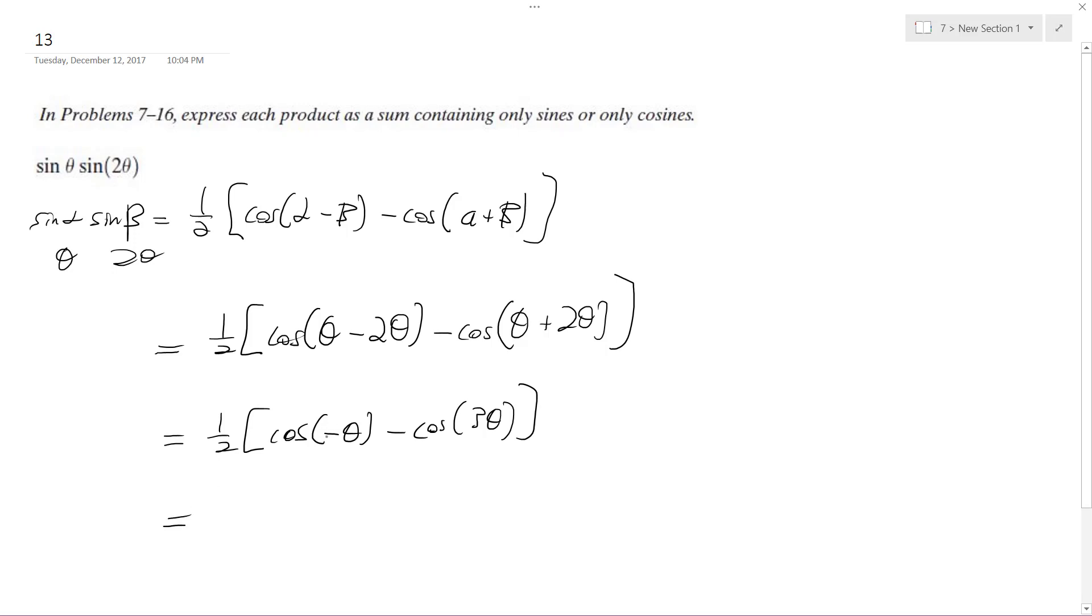And since cosine is an even function, this just comes out so I get one half cosine theta minus cosine 3 theta.